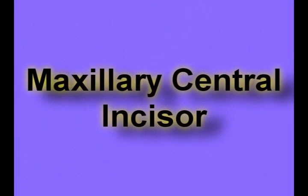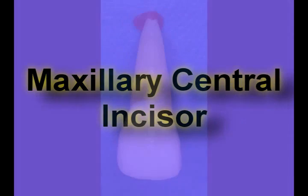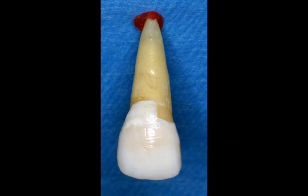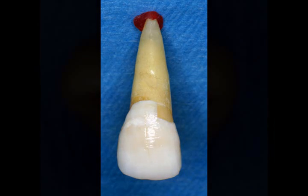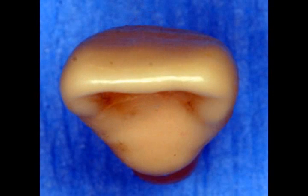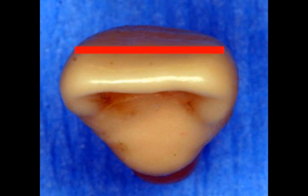The first tooth we'll look at is the maxillary central incisor. Picking out the maxillary central incisor is quite easy, because the tooth is very wide mesial-distally and flat across the facial surface.